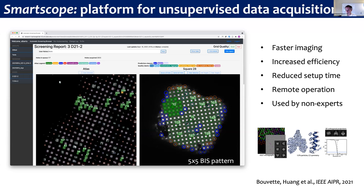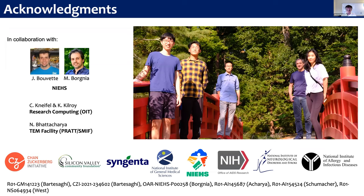We have a conference publication describing most of what I talked about today. We are actually using this every day and it has changed our lives — now everything is so much easier and we're getting so much more data so much faster that we're producing structures a lot faster. This work was in collaboration with Jonathan and Mario from the NIH. I'd also like to acknowledge the support of research computing at Duke OIT, our EM facility, and the different agencies supporting our work. With that, I'd like to finish. If there is time for questions, I'll be happy to take some.